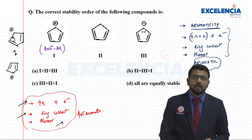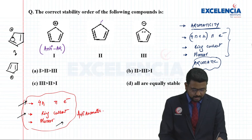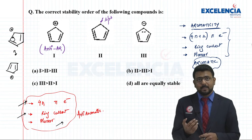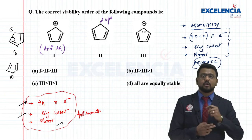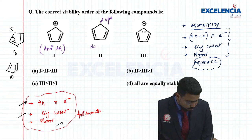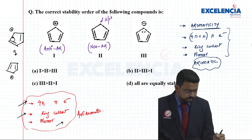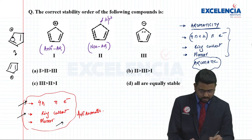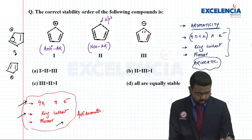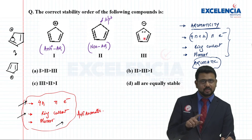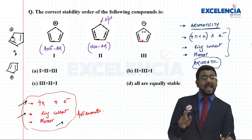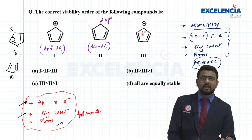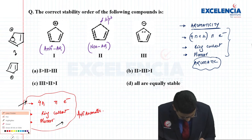Structure 2 has four pi electrons but no charge; the sp3-hybridized carbon means the structure is not planar and is not part of a conjugated system, making it non-aromatic. Structure 3 has lone pairs in conjugation with double bonds - total pi electrons are 2+2+2 = 6, satisfying 4n+2 (n=1), with ring current and planarity, making it aromatic.